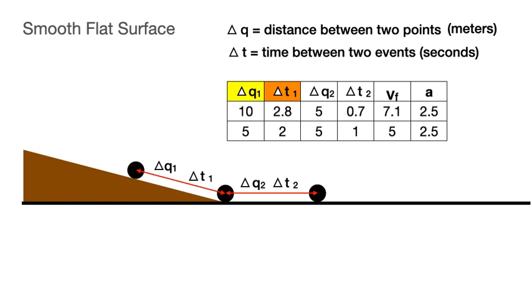Let's ask another question. Can we find a relationship between delta q1 and delta t sub 1? Let's look at the numbers we've already gotten. For example, let's consider whether delta q sub 1 equals k, some constant, times delta t sub 1. That would mean that 10 equals k times 2.8 and 5 equals k times 2.